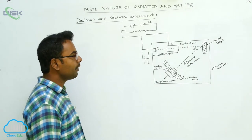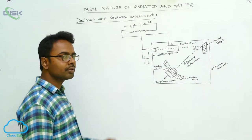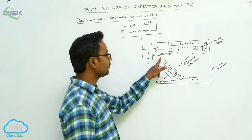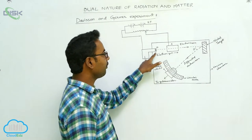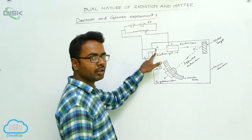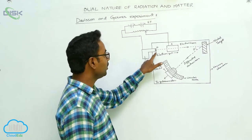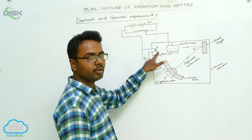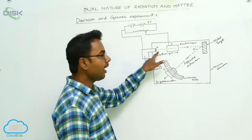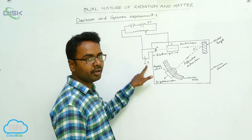To prove the wave nature of the electron, they used the experimental arrangement like this. This consists of an electron gun. The electron gun contains a filament F, which is made up of tungsten and coated with barium oxide, and it is heated by a low-tension battery.